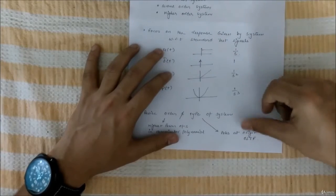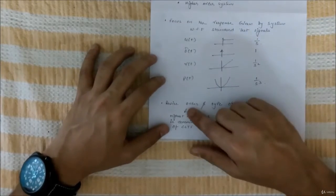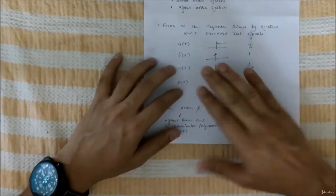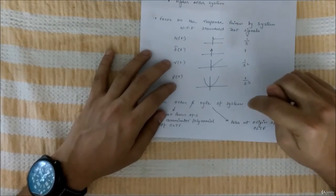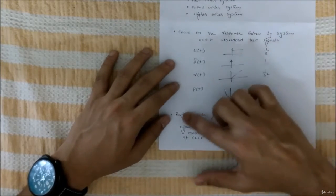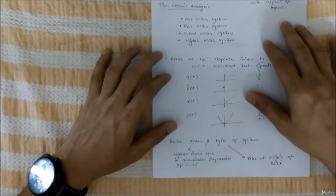If you'll increase the type of the system, the order of the polynomial will increase. But we don't have to see the type of control system, we have to now focus on order of the control system, or I'm sorry, order of the transfer function.